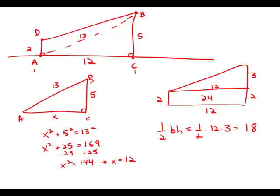24 is the area of the rectangle underneath it, and 18 plus 24 is 42. And this is answer choice C.